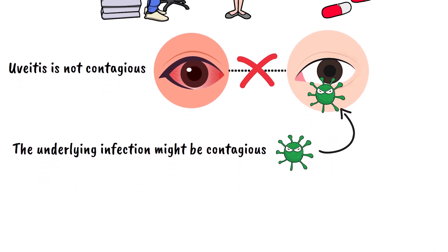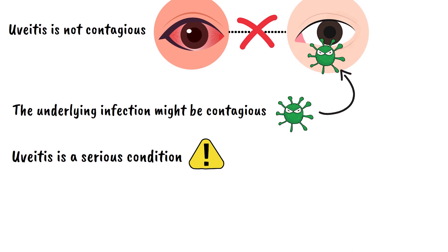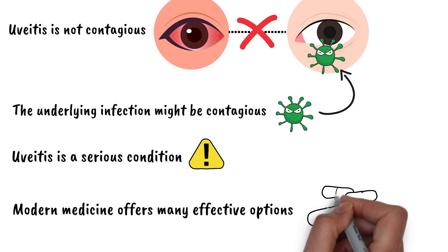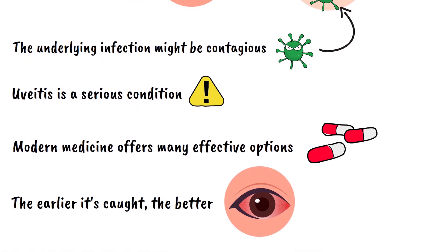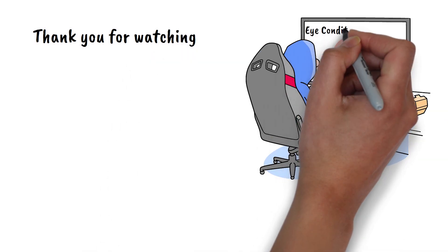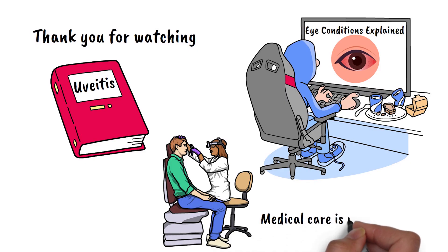The key message is that uveitis is a serious condition that requires prompt medical attention. While it can be challenging to diagnose and treat, modern medicine offers many effective options for managing the inflammation and preserving vision. The earlier it's caught and properly treated, the better the chances of preventing permanent damage and maintaining good vision throughout your life. We hope this information helps you understand uveitis and empowers you to take better care of your eye health and recognize when professional evaluation is needed.